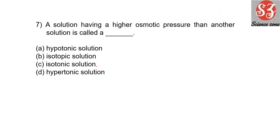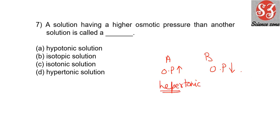Next: 'A solution having a higher osmotic pressure than another solution is called...' If solution A has high osmotic pressure and solution B has low osmotic pressure, then A is called a hypertonic solution (because its osmotic pressure is high — 'hyper' means high) and B is called a hypotonic solution ('hypo' means low). Since we want the one with higher osmotic pressure, the answer is option D: hypertonic solution.